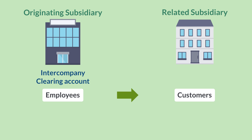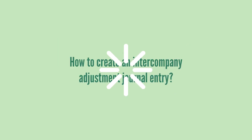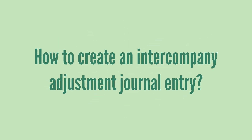The originating subsidiary is the employee subsidiary, while the related subsidiary is the subsidiary of the customer or project. How do you actually create an Intercompany Adjustment journal entry?